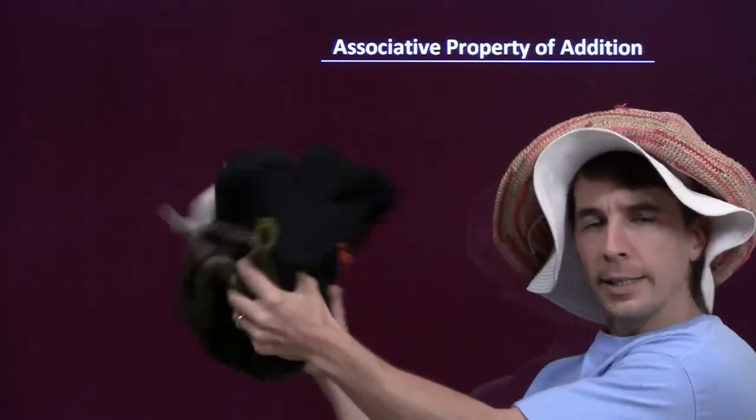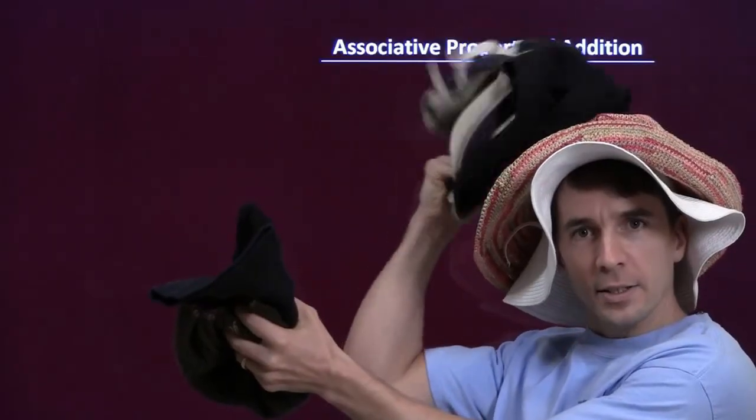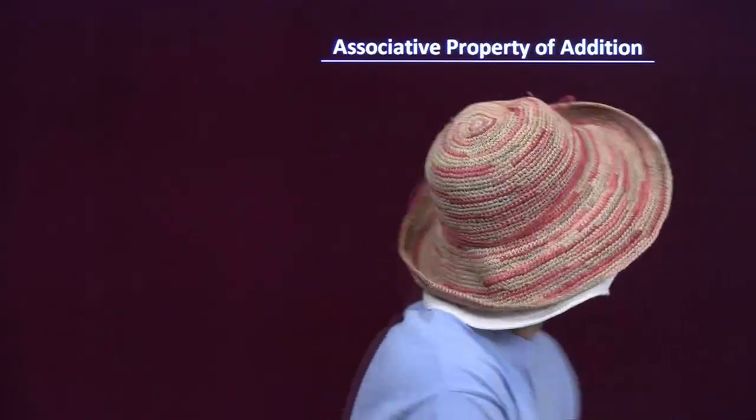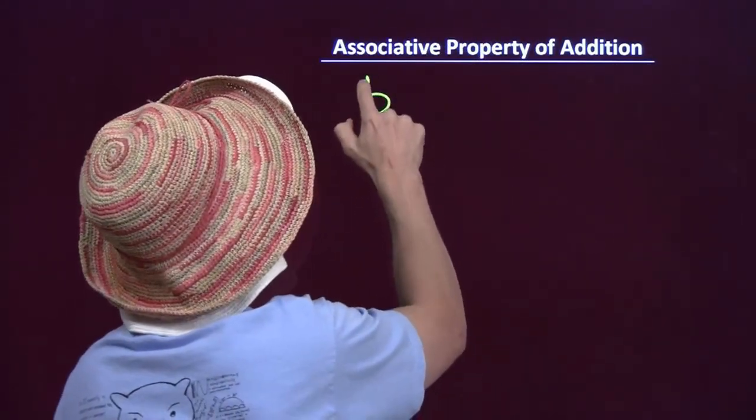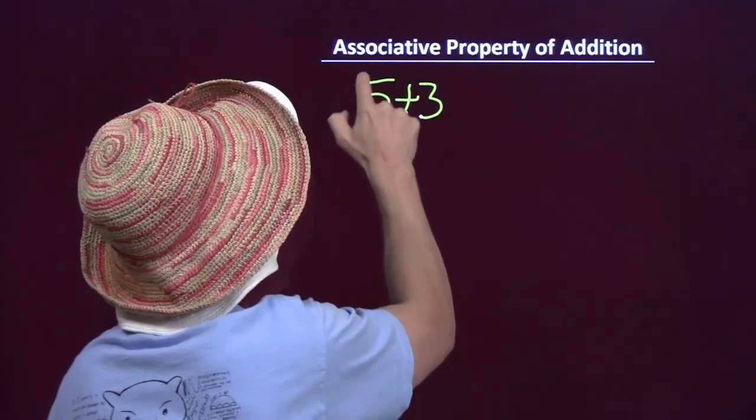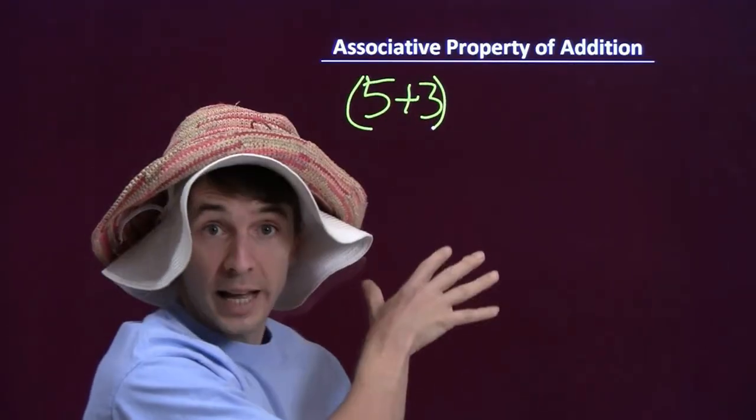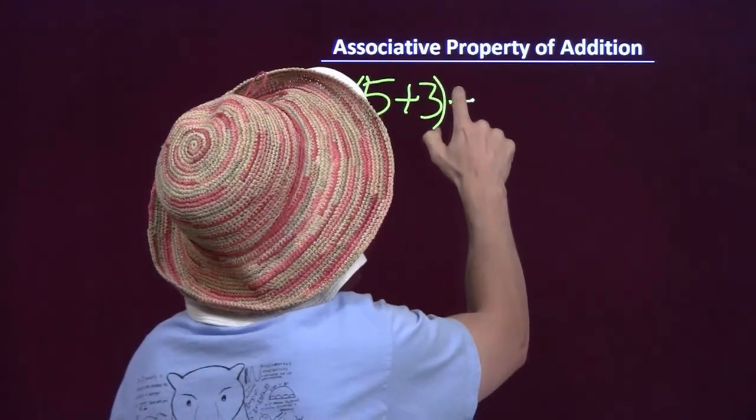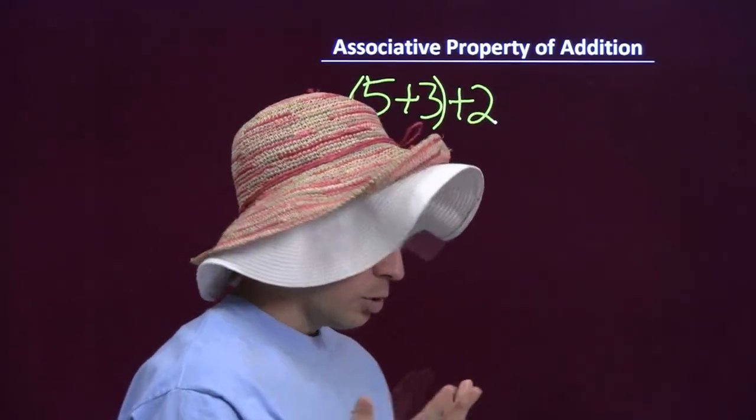Well, I could start off by counting the hats in my hands, and then tacking on the two here on my head. That would sound like five plus three, and we put that in parentheses. The parentheses tell us we add those first, plus the two floppy hats on my head.